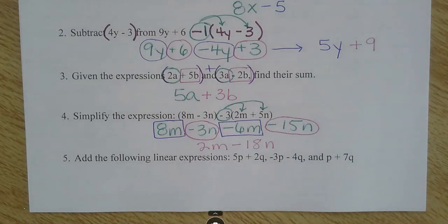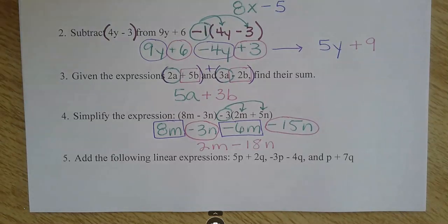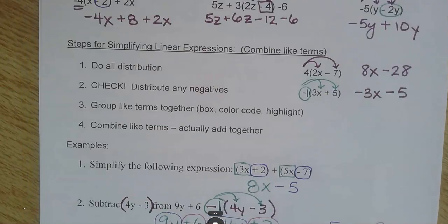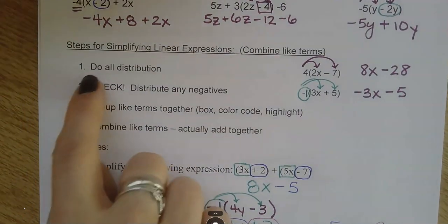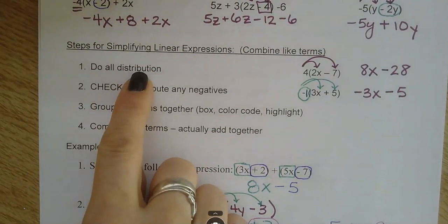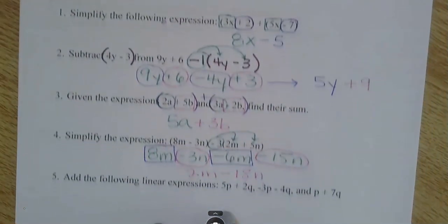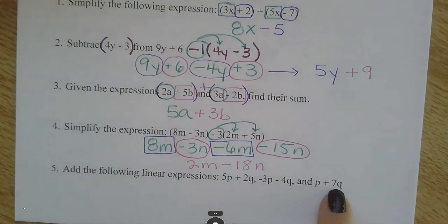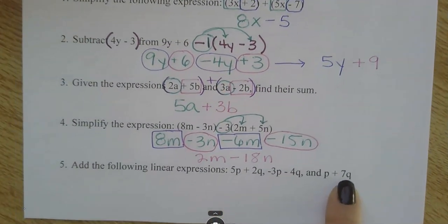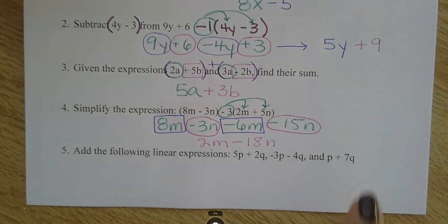Last one. This says: add the following expressions — 5p plus 2q, negative 3p minus 4q, and p plus 7q. Going back to my steps: check to see if I need to distribute anything. No parentheses, so nothing to distribute. I'm just ready to put like terms together.